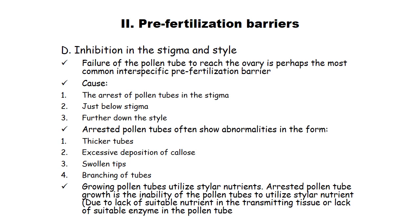Inhibition in the stigma and style is due to failure of the pollen tube to reach the ovary. Arrested pollen tube is perhaps the most common interspecific pre-hybridization fertilization barrier. Arrested pollen tubes often show abnormalities: thicker tubes, excessive deposition of callose, swollen tips, and branching of tubes. Arrested pollen tube growth results from inability to utilize stylar nutrients due to lack of suitable nutrients in the transmitting tissue or lack of suitable enzymes in the pollen tube.